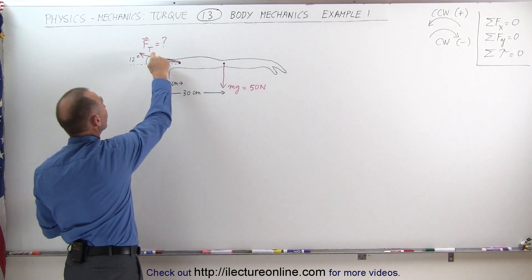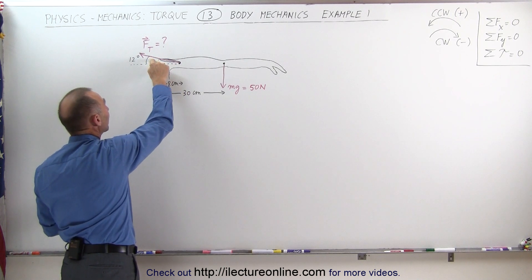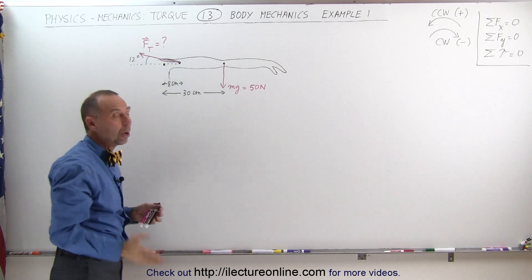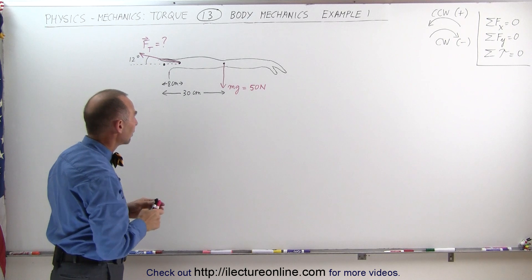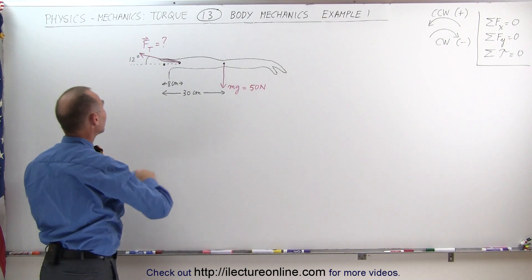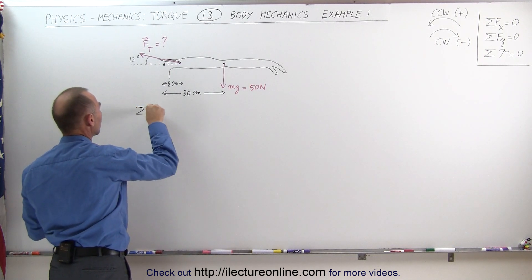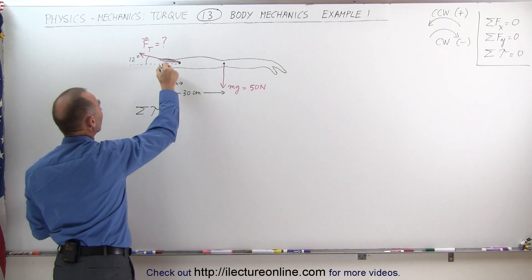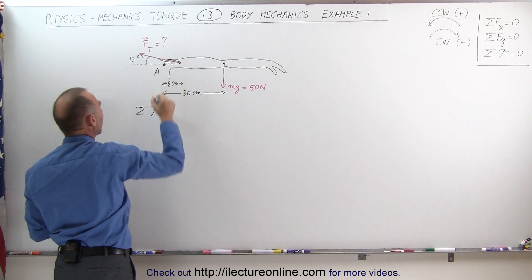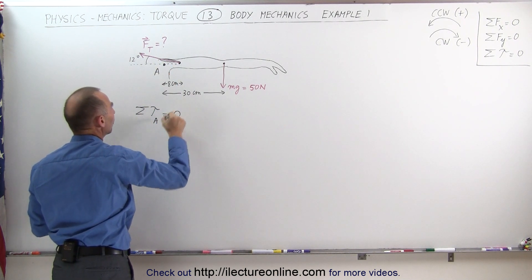Let's find out what force is required from that muscle in order to get your arm and hold it in that particular position. Again, we can say that the sum of all the torques about the pivot point, let's call the pivot point right here, let's call that pivot point A. About pivot point A must add up to zero.